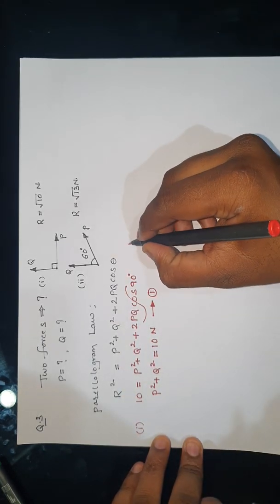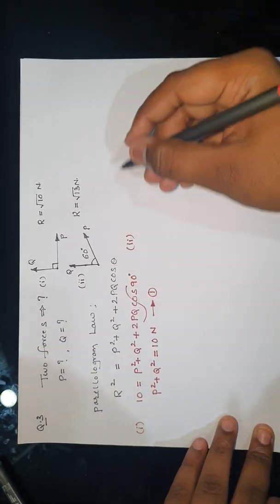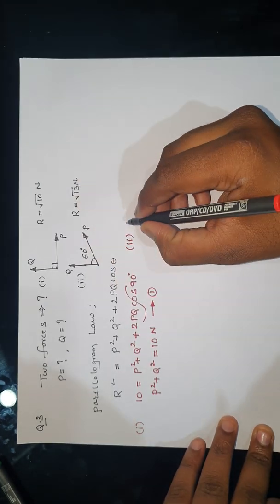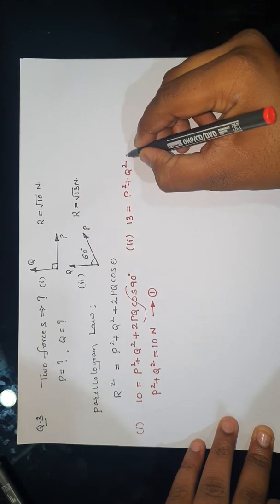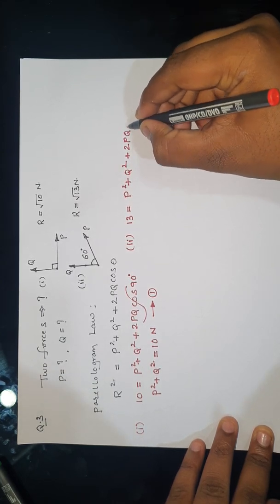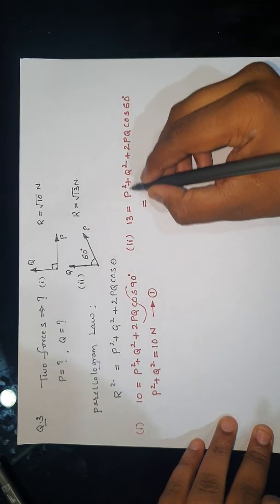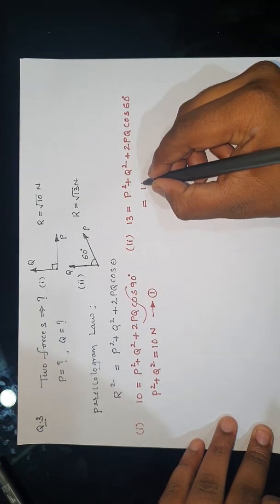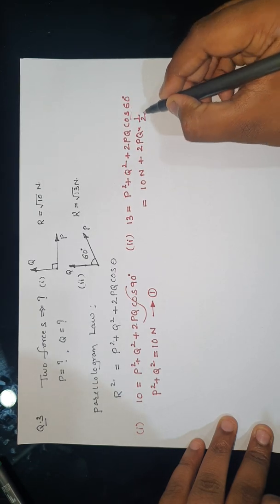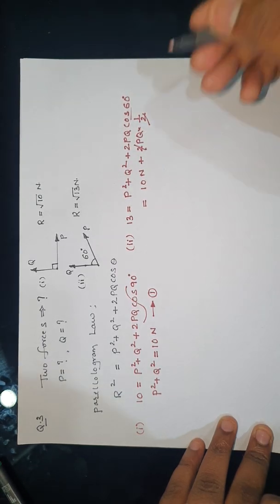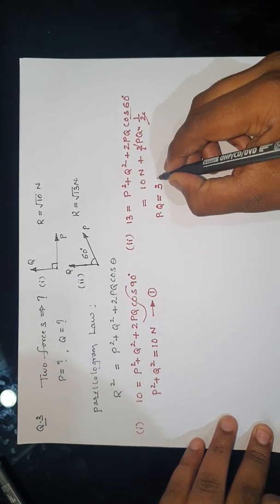Applying the same formula for the second condition: the resultant is √13 N, so 13 = P² + Q² + 2PQ·cos 60°. Substituting P² + Q² = 10 and cos 60° = 1/2, the 2 cancels, giving 13 = 10 + PQ. Taking 10 to the left-hand side, the product PQ equals 3. This is equation number 2.